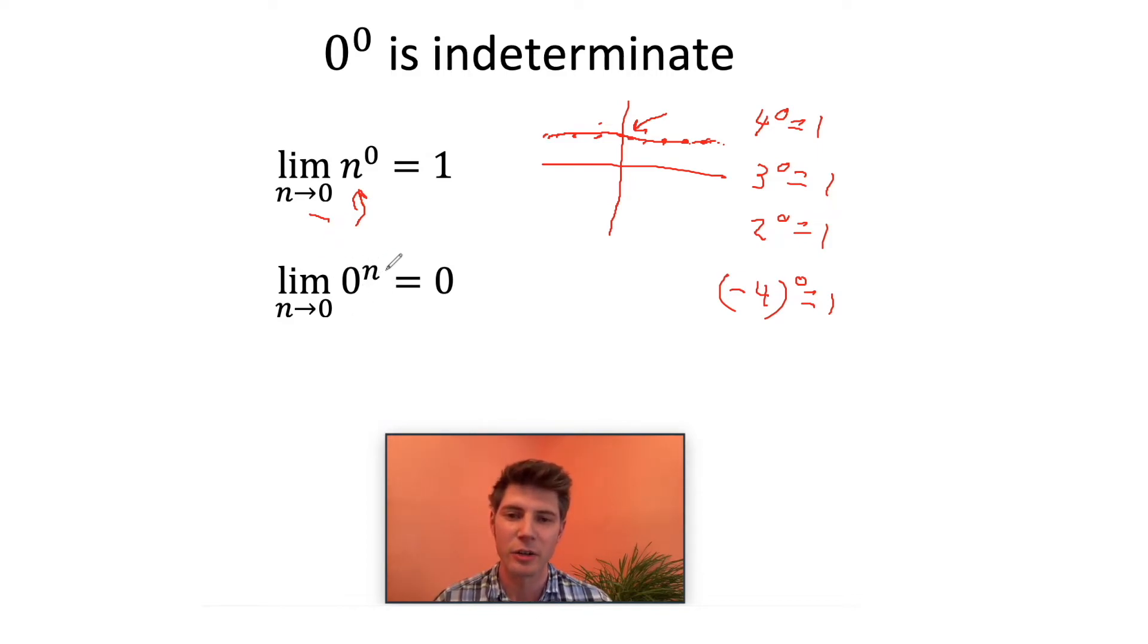Now in another case, we could say zero to the n. So for this one, we're plotting the points, but we say zero to the one, zero to the two, and so on, and all those are equal to zero. So all of these points are going to be on the axis. And so what happens with this limit is as we approach zero for n, it approaches zero, not one.